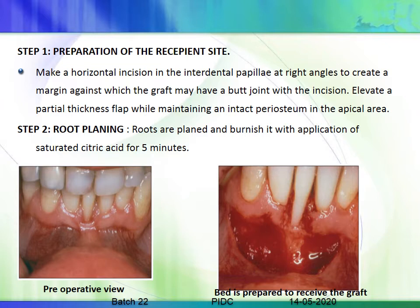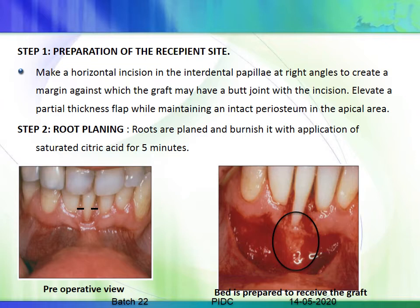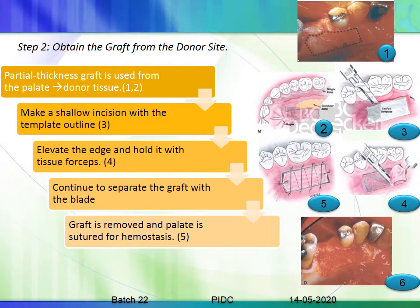For this technique, the first step is to make two horizontal incisions at the interdental papilla level at right angles, to create a margin against which the graft may have a butt joint. Then elevate a partial thickness flap over this area, maintaining intact periosteum in the apical area. Following that, the roots are cleaned and burnished with citric acid for around five minutes.